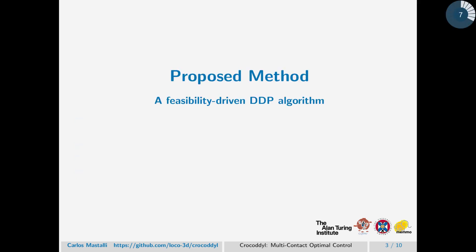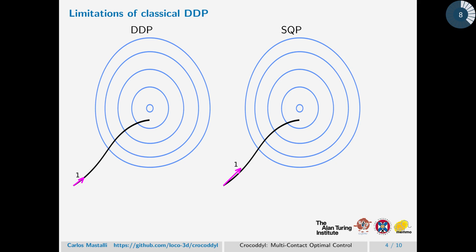Our proposed method. First of all, we need to acknowledge the limitation of the classical DDP. In the figure, you can see the level set described by the cost function in blue. Additionally, there is a black curve that describes the equality constraint defined by the dynamics of the system. As you can see, both methods compute the same search direction.